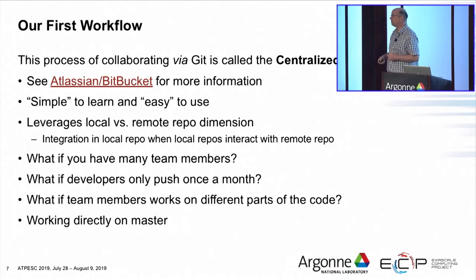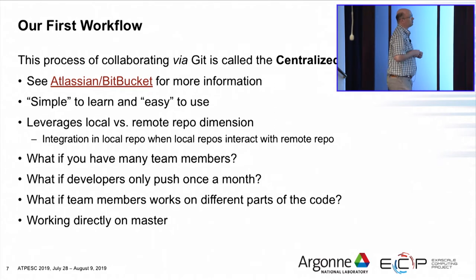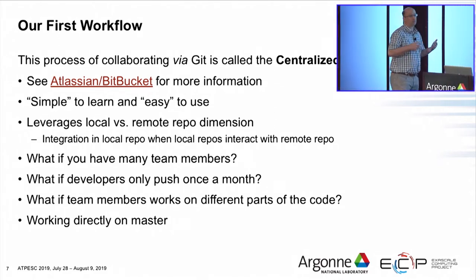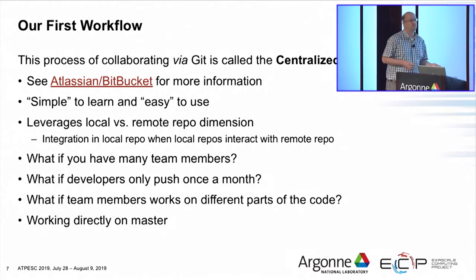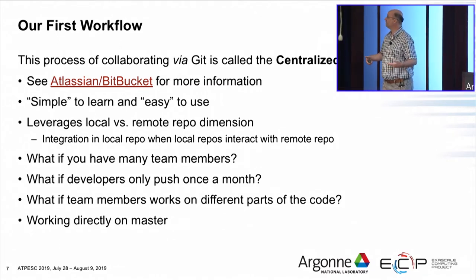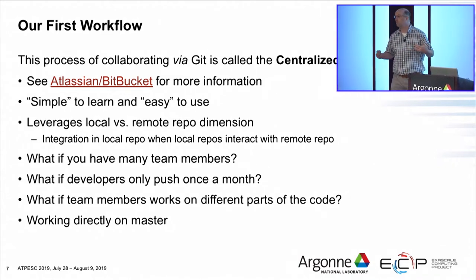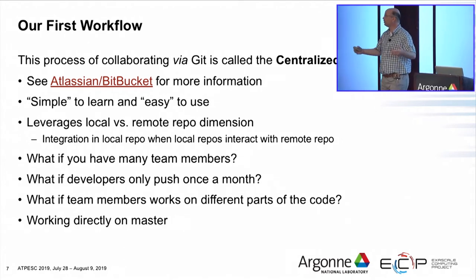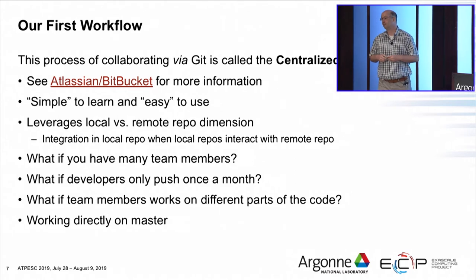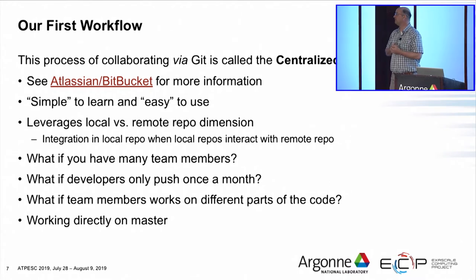We've got through our first workflow, which might be categorized as a centralized workflow. There's a link for more information. In terms of all the workflows we'll see, this is the simplest to learn and easiest to use — though if you're new to collaborating with many people through Git, it's still somewhat challenging. What do we like? We're really leveraging local versus remote repositories. The two people were working in parallel and only had difficulties when synchronizing. Now we can ask ourselves: how does this scale up with team size? If I'm on a team of ten people and try to push results, I might find conflicts with not just Alice but ten people — that's going to be very hard to resolve.